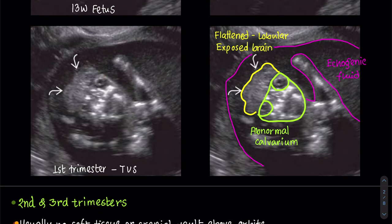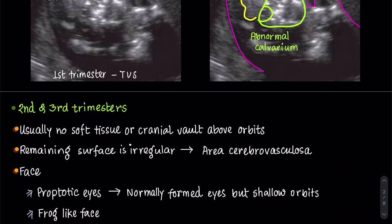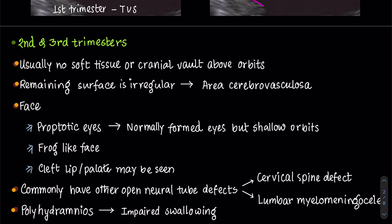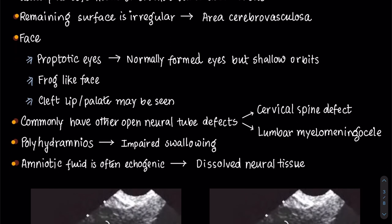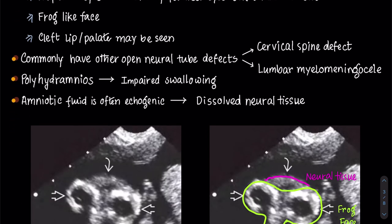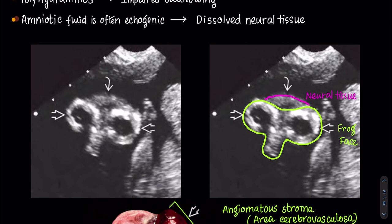Recognition of the first trimester appearance of anencephaly is important for early diagnosis of this lethal malformation. In the second and third trimesters, usually no soft tissue or definitely no cranial vault is seen above the fetal orbits. The cranial defect is covered by irregular angiomatous stroma known as area cerebrovasculosa. Fetal eyes appear proptotic due to shallow orbits and abnormally formed skull base; however, the eyes themselves are normally formed. In the coronal plane, the face shows a frog-like appearance. Cleft lip or cleft palate may also be seen. Other neural tube defects like spina bifida, especially at the cervical region, and lumbar myelomeningocele are commonly seen. Polyhydramnios is common due to impaired swallowing, and amniotic fluid becomes echogenic due to dissolved neural tissue.